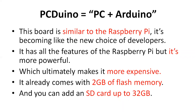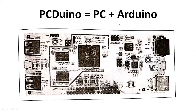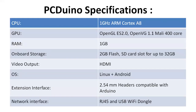You need to invest more money for the PCDuino compared to the Raspberry Pi. It has 2 GB flash memory and an SD card slot supporting up to 32 GB. The PCDuino board structure includes all the same interfaces as the Raspberry Pi — HDMI, audio output, Ethernet — plus its own enhanced specifications.